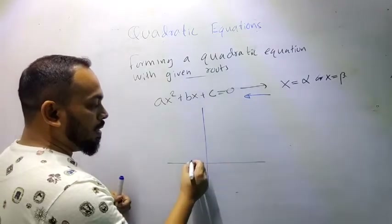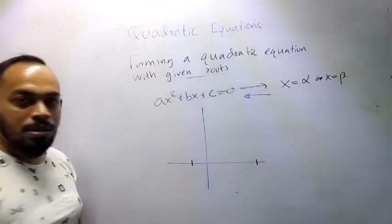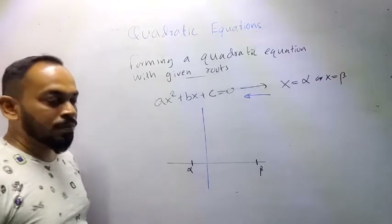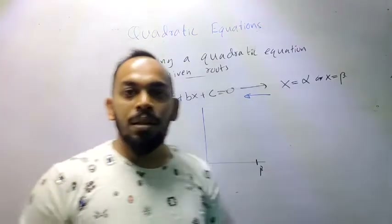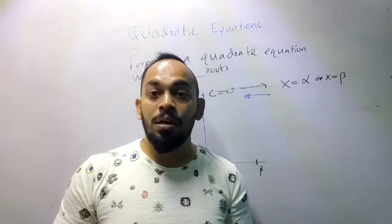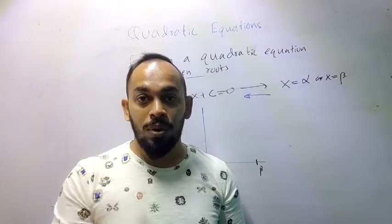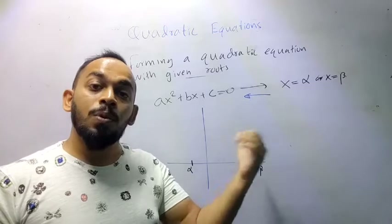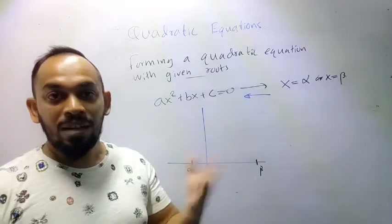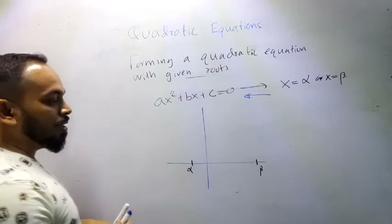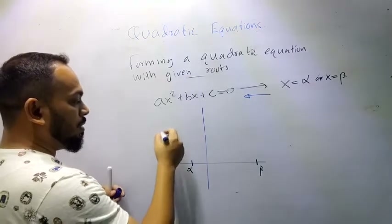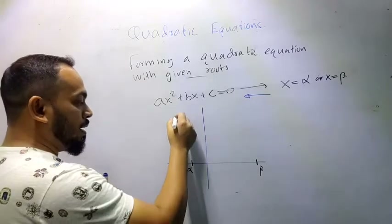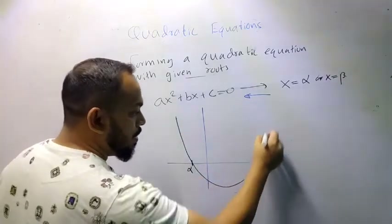When we are given two solutions α and β and asked to find the quadratic equation which satisfies this — quadratic equations come from quadratic functions. There can be infinitely many quadratic functions for the same roots.